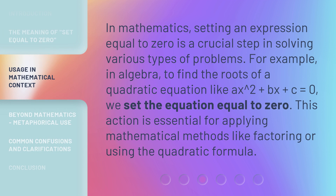In mathematics, setting an expression equal to zero is a crucial step in solving various types of problems. For example, in algebra, to find the roots of a quadratic equation like x squared plus bx plus c equals zero, we set the equation equal to zero. This action is essential for applying mathematical methods like factoring or using the quadratic formula.